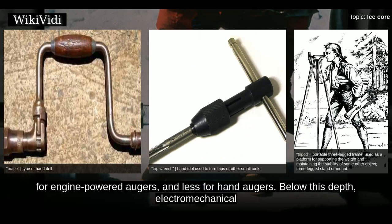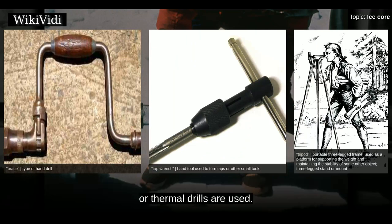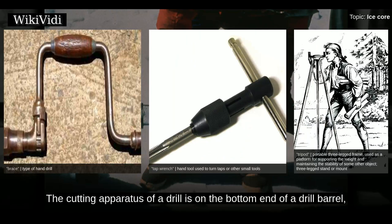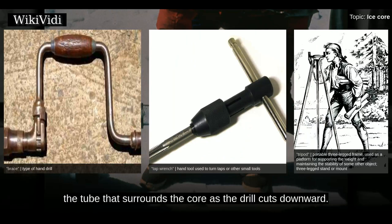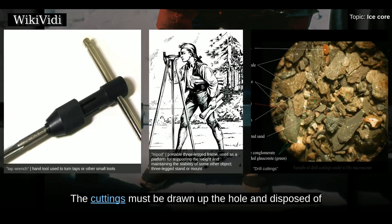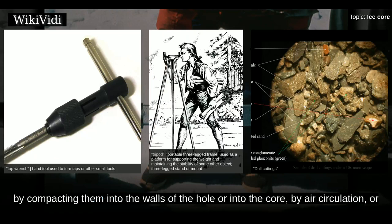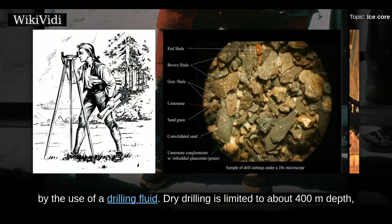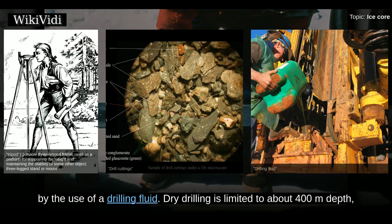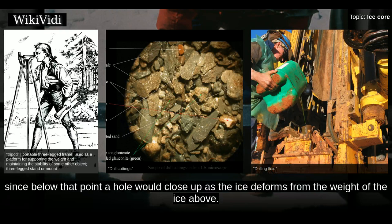Below this depth, electromechanical or thermal drills are used. The cutting apparatus of a drill is on the bottom end of a drill barrel — the tube that surrounds the core as the drill cuts downward. The cuttings must be drawn up the hole and disposed of, or they will reduce the cutting efficiency of the drill. They can be removed by compacting them into the walls of the hole, by air circulation, or by the use of a drilling fluid. Dry drilling is limited to about 400 meters depth, since below that point a hole would close up as the ice deforms from the weight of the ice above.